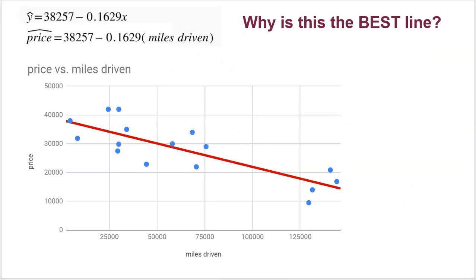We've already noted it's linear, so we put a line through the data — this beautiful red line — to make predictions. That line gives us: predicted price equals 38,257 minus 0.629 times X, where X is the miles driven. But why is this the best line? What makes it the best line?